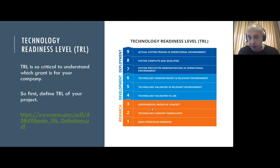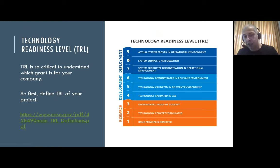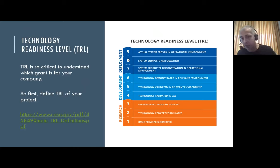TRL is so important — developed by NASA. As you can see on this graph, levels one, two, and three are the research TRL levels; four, five, and six are development; and seven, eight, and nine is deployment. If you have a project in the research area, you will try to understand the concept and develop some experimental proof of concepts — you are in the research area.